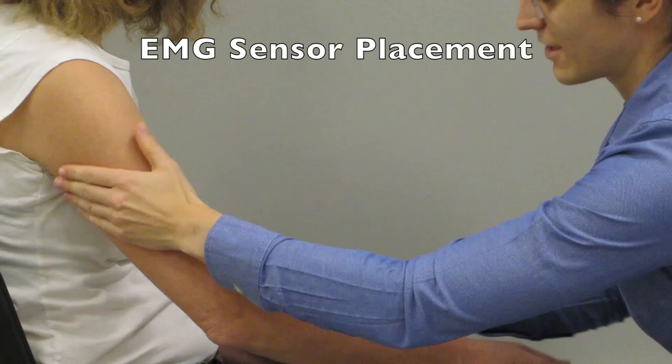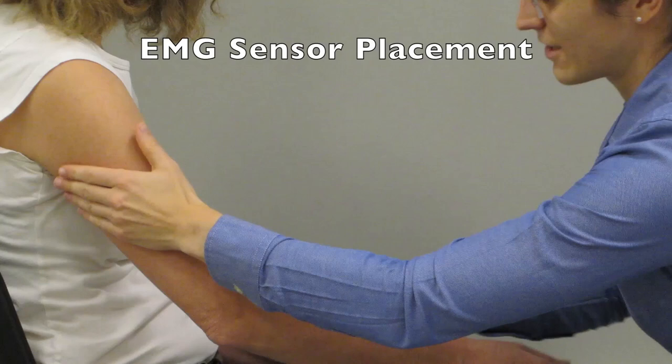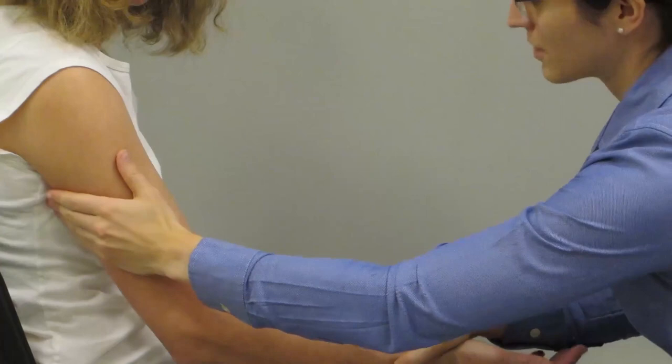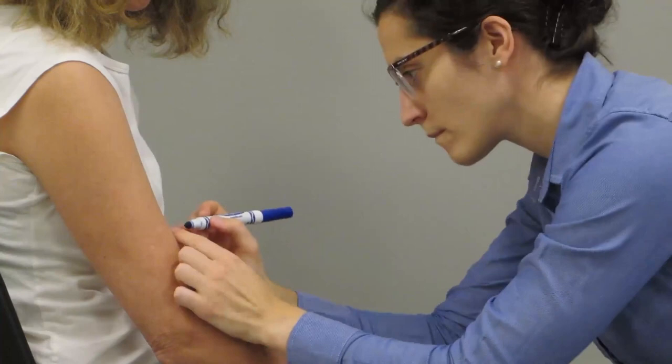Next, attach the biceps brachii and triceps brachii EMG sensors. Manually resist elbow flexion to locate the biceps brachii muscle belly and mark the central point of the muscle belly with a small dot of washable marker to denote location for EMG sensor placement.